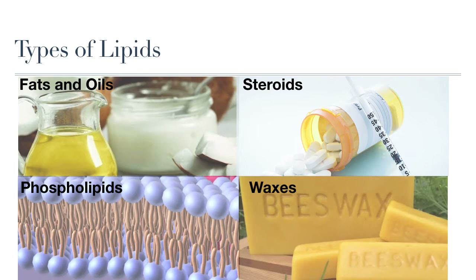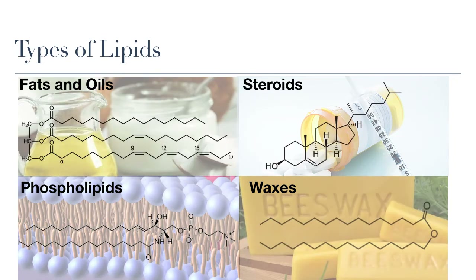During this lesson, we will learn about the structure, about the properties, and about the functions of each category of lipids. The key characteristic that defines lipids is that they are largely made up of long hydrocarbon chains or hydrocarbon rings.